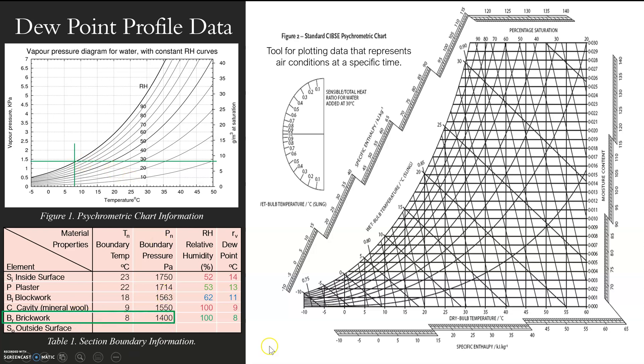So there you go. That's how that works. And just going over to the psychrometric chart very quickly, the standard CIBSE one. I could, if I have the relative humidity and the boundary temperature, I could actually work this out as well. So if I use my 23 degrees and my relative humidity was 52%.